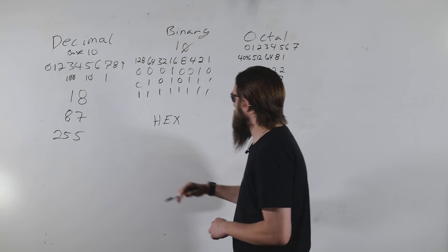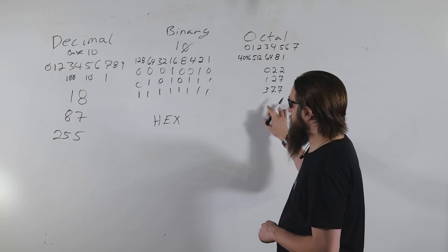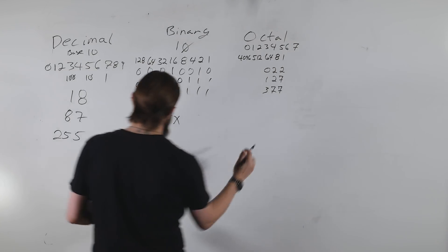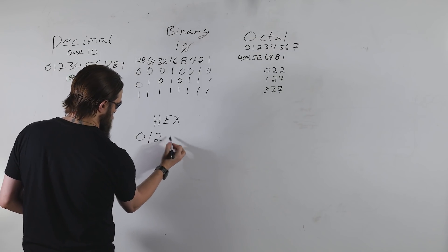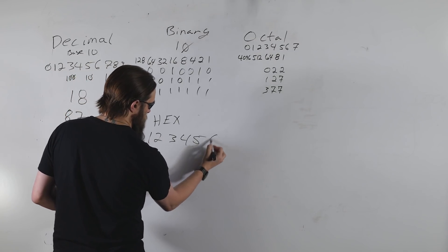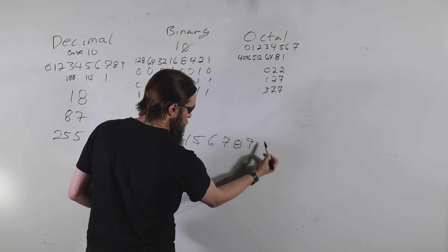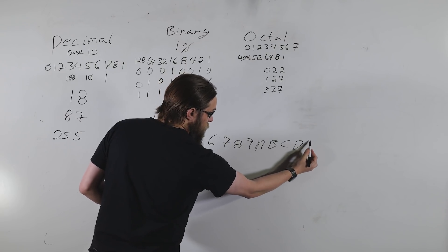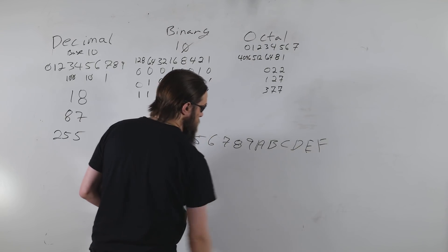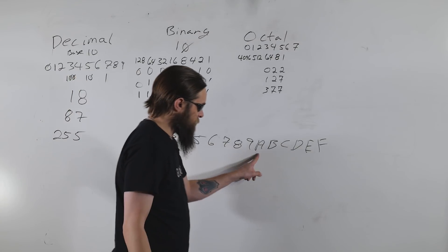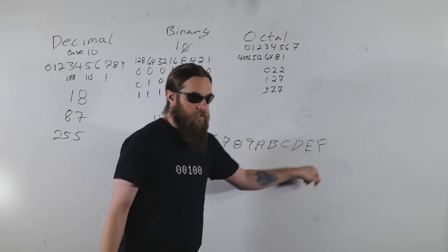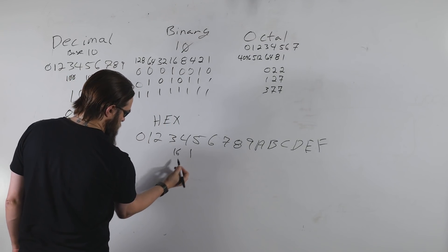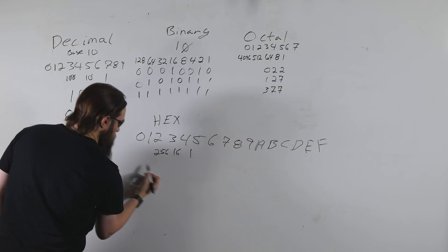Hexadecimal is base 16, so the digits are 0, 1, 2, 3, 4, 5, 6, 7, 8, 9, A, B, C, D, E, and F — where A through F represent 10 through 15. Then it wraps around. The place values are: ones, 16s, 256, and 4096.